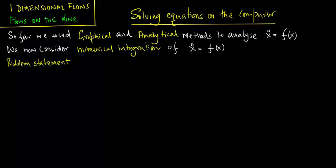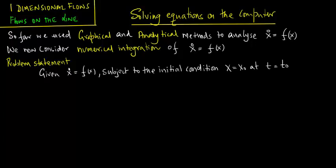Here is a general problem statement. Given x dot equals f of x subject to the initial condition x equals x naught at t equals t naught, find a way to approximate the solution x of t.